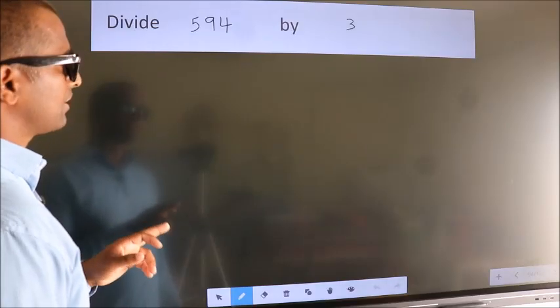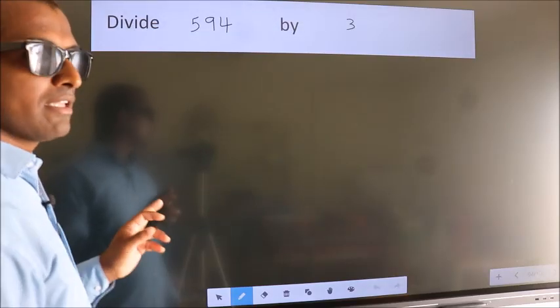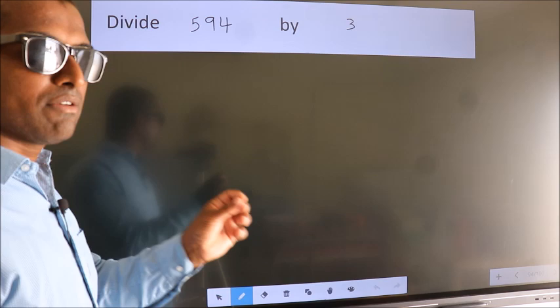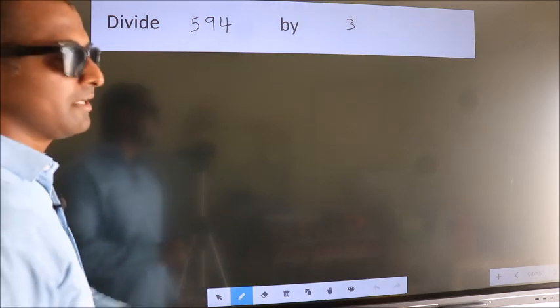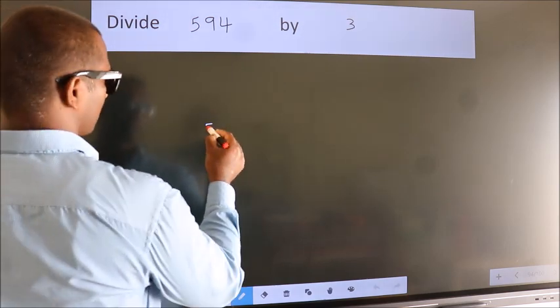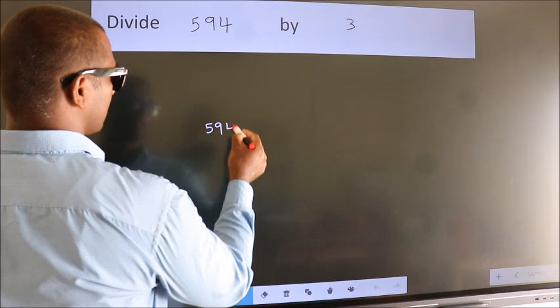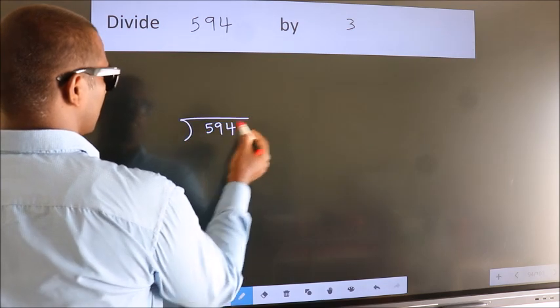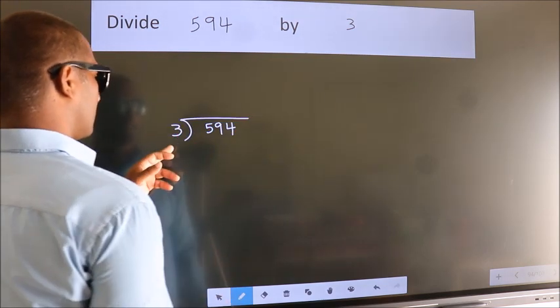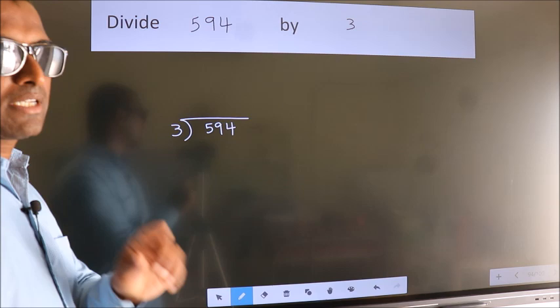Divide 594 by 3. To do this division, we should frame it in this way: 594 here, 3 here. This is your step 1.